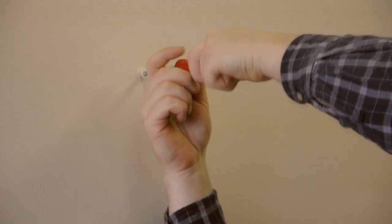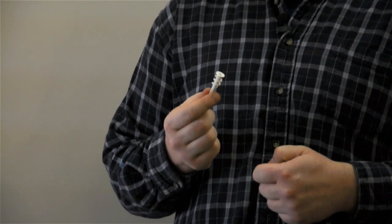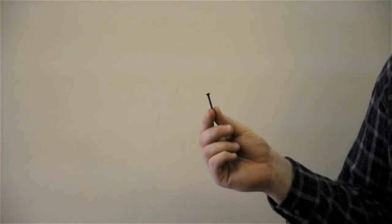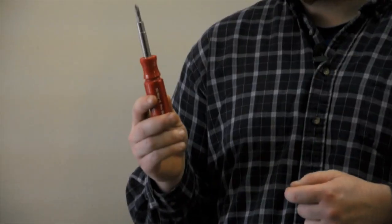I'm Joshua Clement with ID Contractors. I'm going to show you how to hang a heavy wall painting on drywall. For this you're going to need a couple tools: a wall anchor, a screw, and a screwdriver.